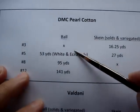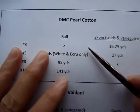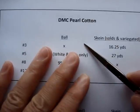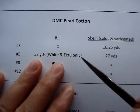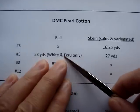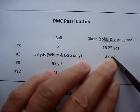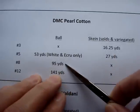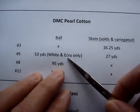You'll notice the light has changed — I had to redo this section. I also want to note that DMC no longer makes balls of pearl cotton in colors for the number five — they now only come in skeins. The number three is also only in skeins. However, the number eight and number twelve DMC pearl cottons are still available in balls.